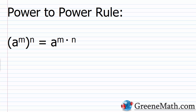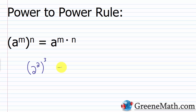Now let's talk about the power-to-power rule, which will come up quite often. If we have some real number a raised to the power of m, and then we raise that to the power of n, we keep the base a the same and multiply the exponents m times n. For example, two squared raised to the third power: keep two the same, multiply two times three to get six — so this is two to the sixth power, which we know is 64.